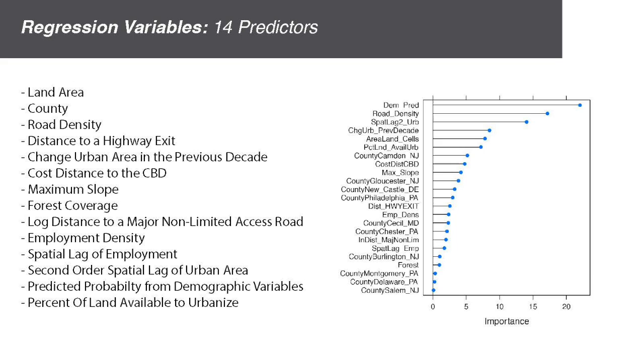Ultimately, I settled on 14 predictors for my model. They all tell different stories about urban development patterns. As you can see, road density and spatial lag of urban areas are among the most important predictors.